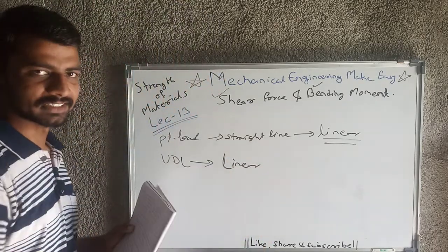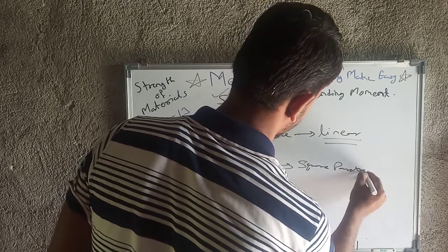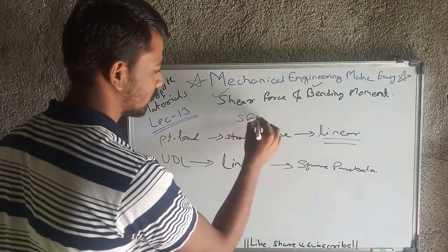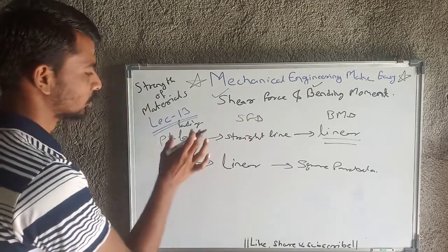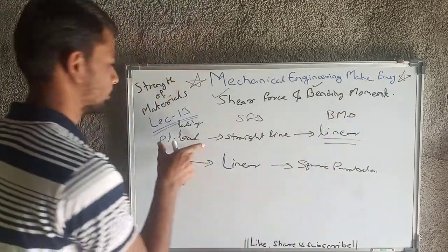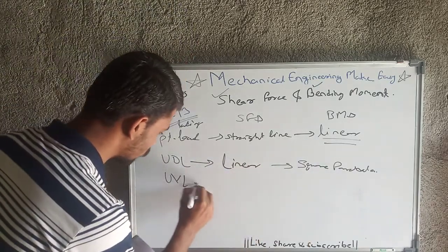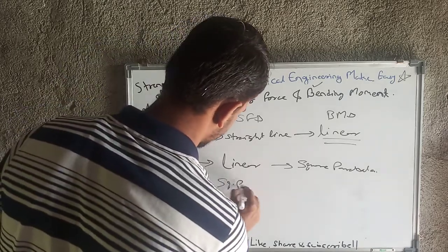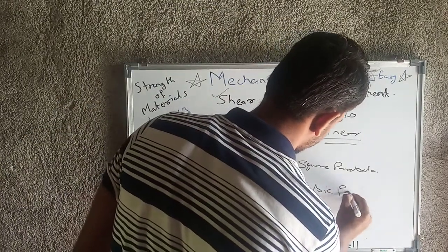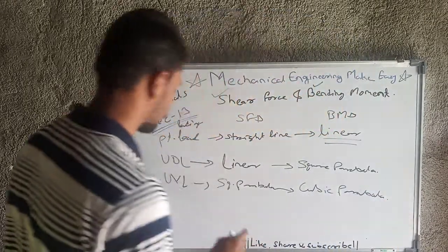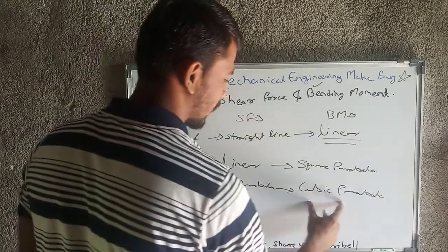If there is a UDL — uniformly distributed load — then the shear force diagram will be linear (inclined line), and the bending moment diagram will be a square parabola. For UVL — uniformly varying load — the shear force diagram will vary as a square parabola, and the bending moment diagram will vary as a cubic parabola.